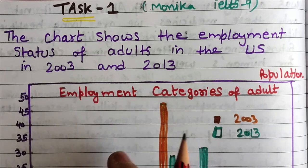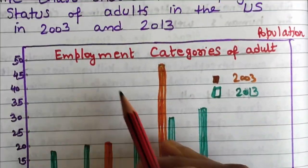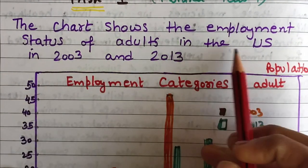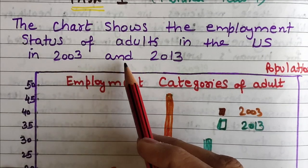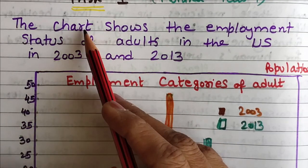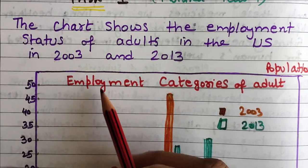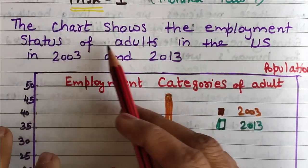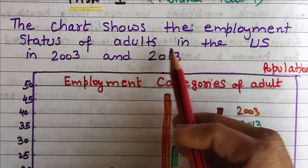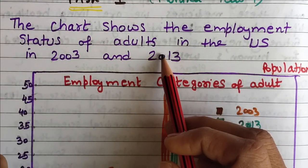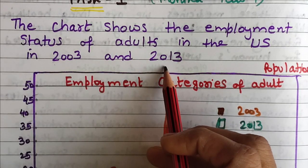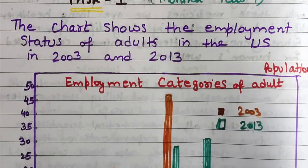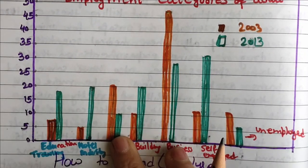This writing task 1 is a bar graph — you can also call it a bar chart. The chart shows the employment status of adults in the US in 2003 and 2013. So these two years have been brought together, and that data is presented here in this task 1.